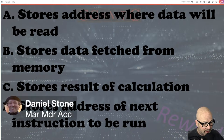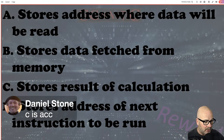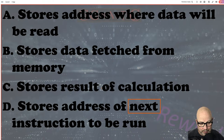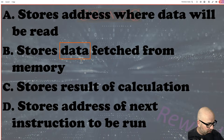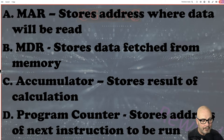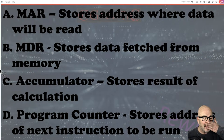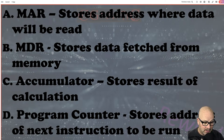Hello Dan! So you correctly said MAR, MDR and ACC. And then you have said C is the accumulator, which it certainly is. The other one I'd think about is that whenever you see the word 'next' — the next instruction — that's going to be the program counter. And the other giveaway is that there's only one that holds the data rather than the address, and that is the MDR. So the MAR stores the address where data will be read; the MDR stores data fetched from memory; the accumulator stores the result of calculation, sits inside the ALU; and the PC, the program counter, stores the address of the next instruction — it points towards the next instruction.